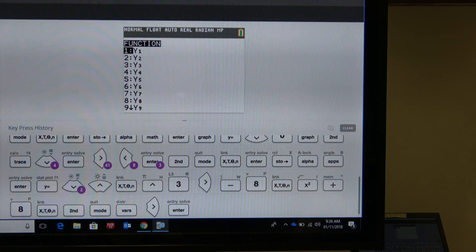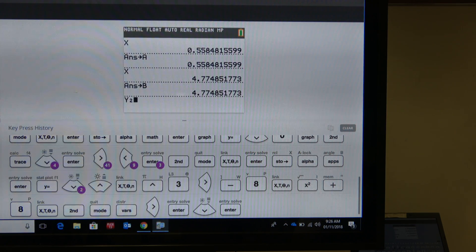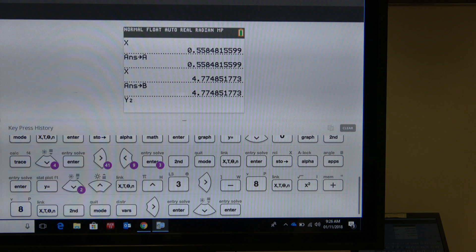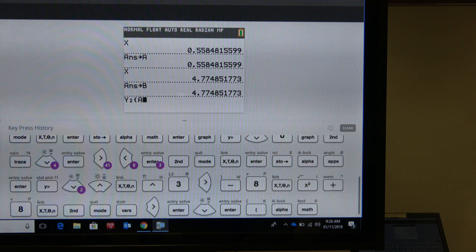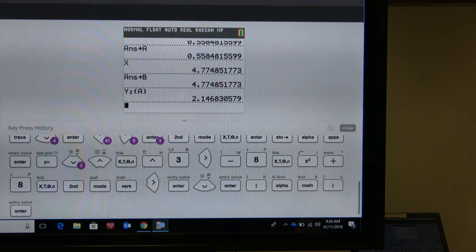And then again, just be careful, want to make sure you use y2. Do y2, open parentheses, alpha a, close parentheses, and we get 2.14.